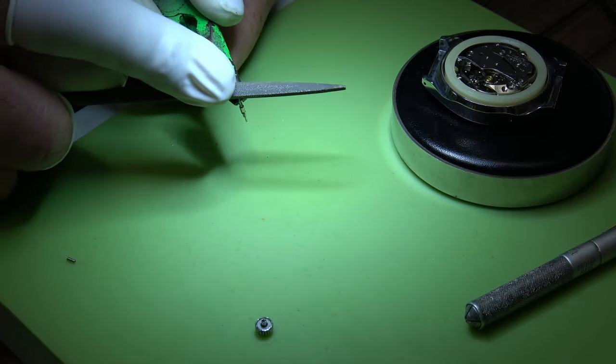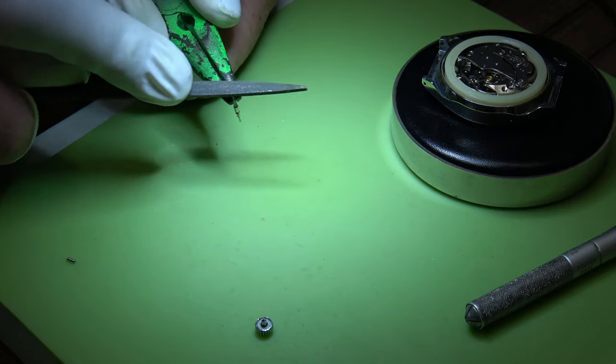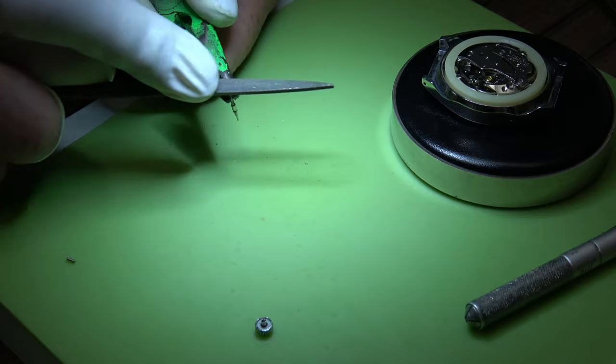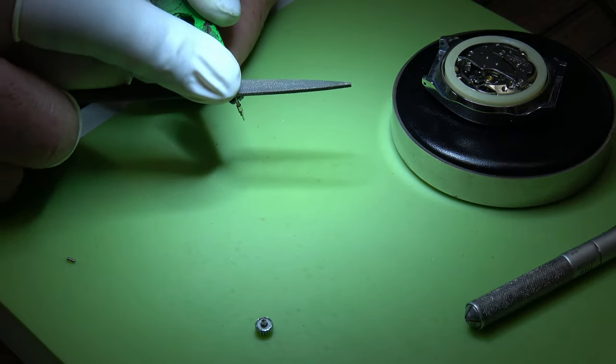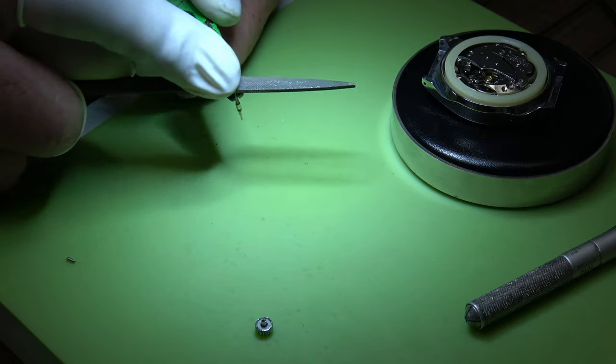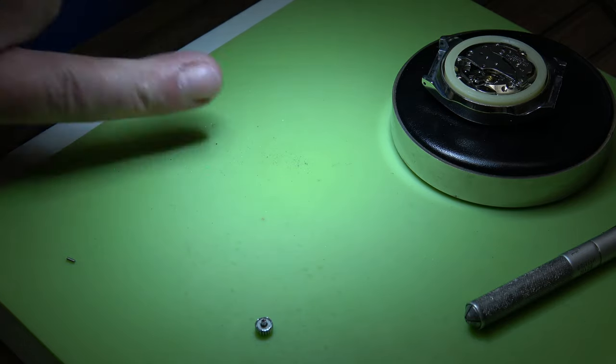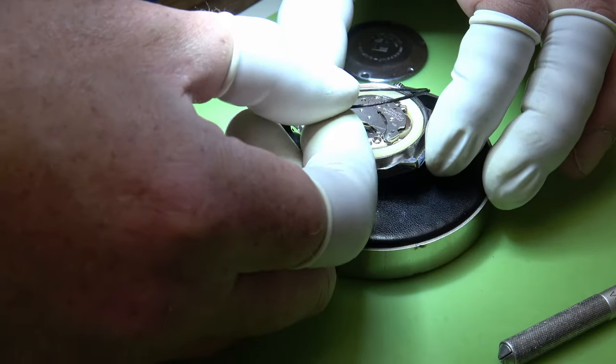Now what we are going to do is trim the winding stem. So I have cut it down to roughly the right size. Now I am just doing the fine tuning. It is just a case of giving it a bit of file, put it in, see where it is, do the same again until it sits just right.